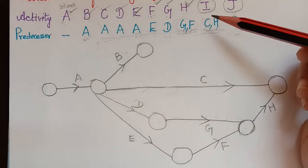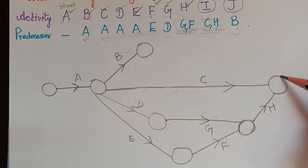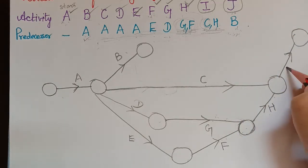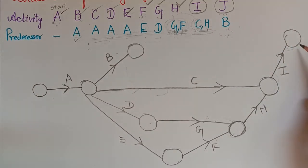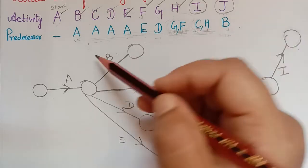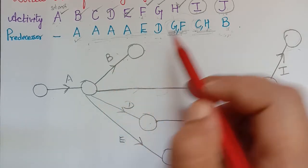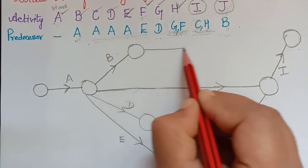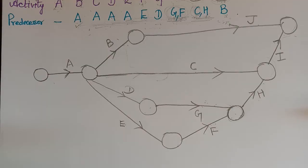Next, activity I has predecessors C and H. Since I is an ending activity, we draw it emanating from the shared end node of C and H, with no further arrows after it — this is the final end node. Finally, activity J emanates from activity B. Since J is also an ending activity, it ends at the same final end node. This is how we draw the network diagram.